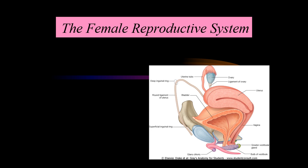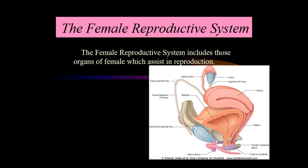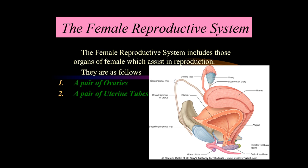The female reproductive system consists of primary and secondary organs. The main primary organ is the ovaries — a pair of ovaries. The accessory organs are the fallopian tubes or uterine tubes, the uterus, cervix, and the vagina. We have already studied the ovaries, the uterine tubes, uterus, and cervix. Today we will conclude with the last part of this female reproductive system, that is the vagina.